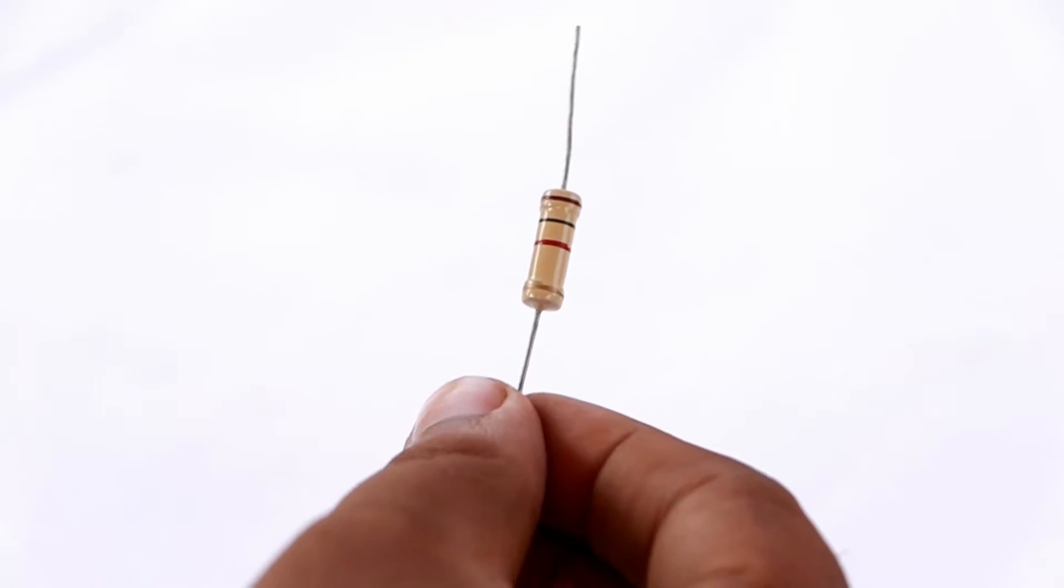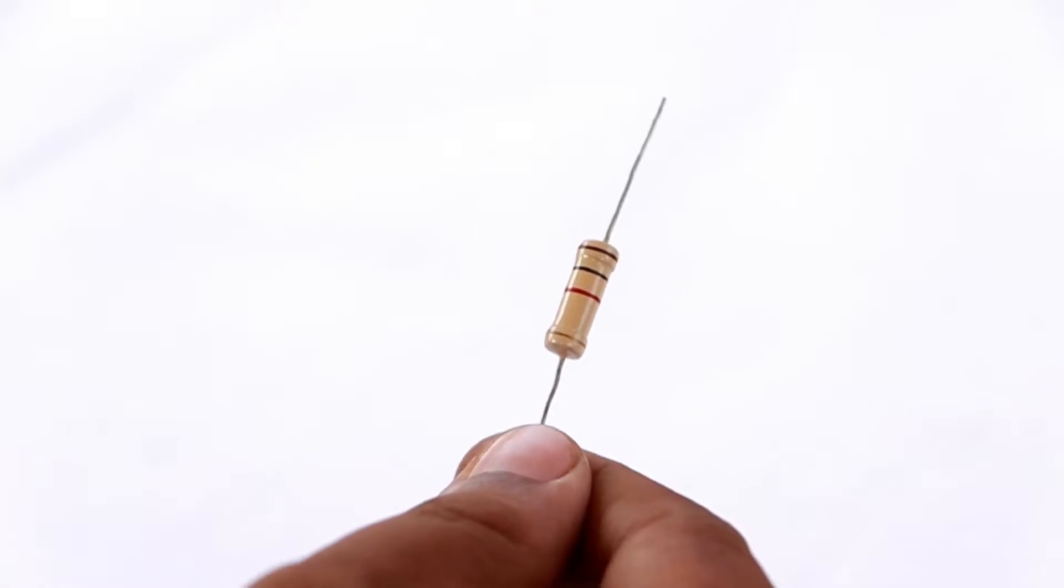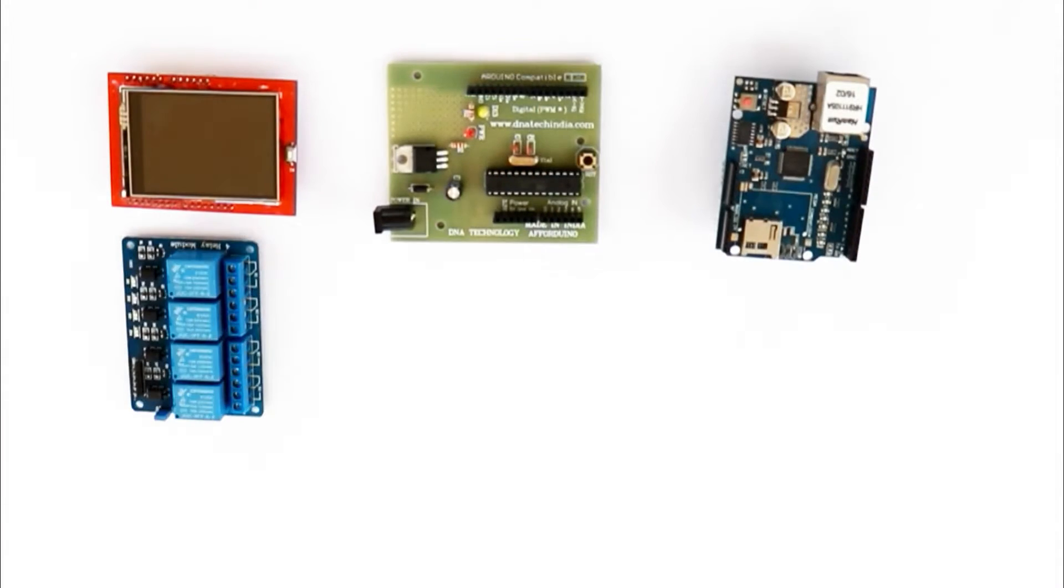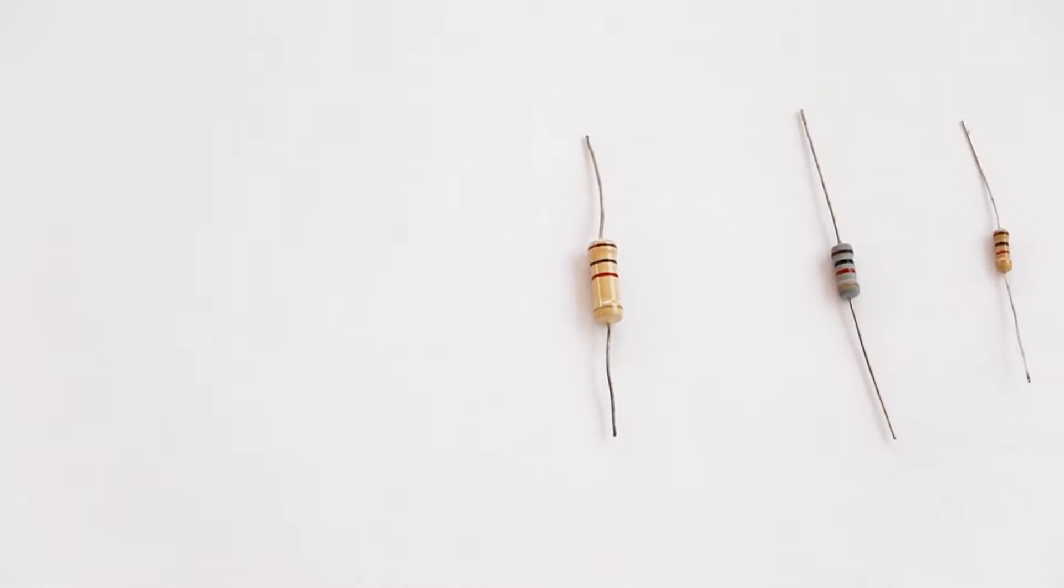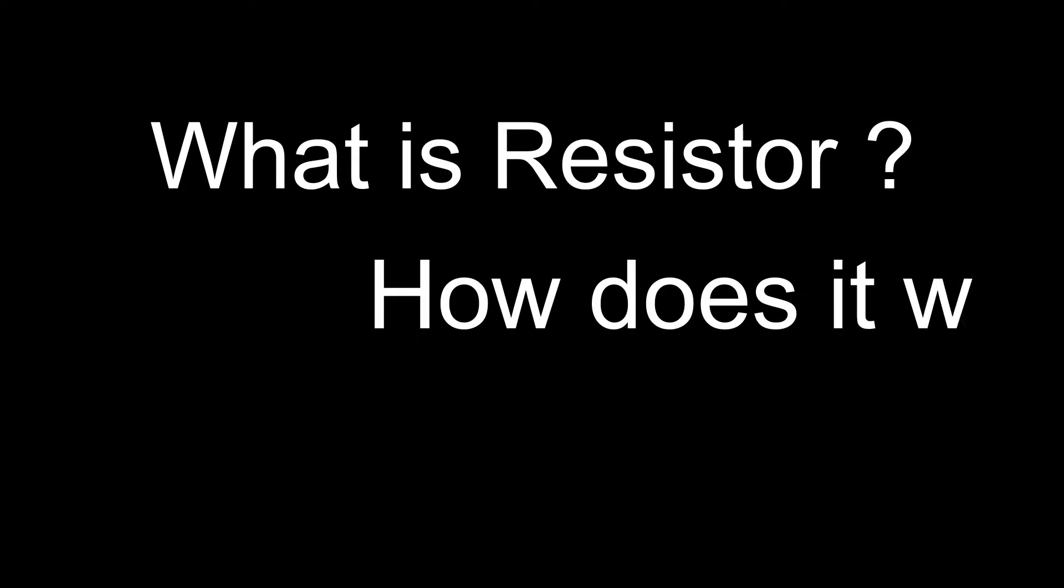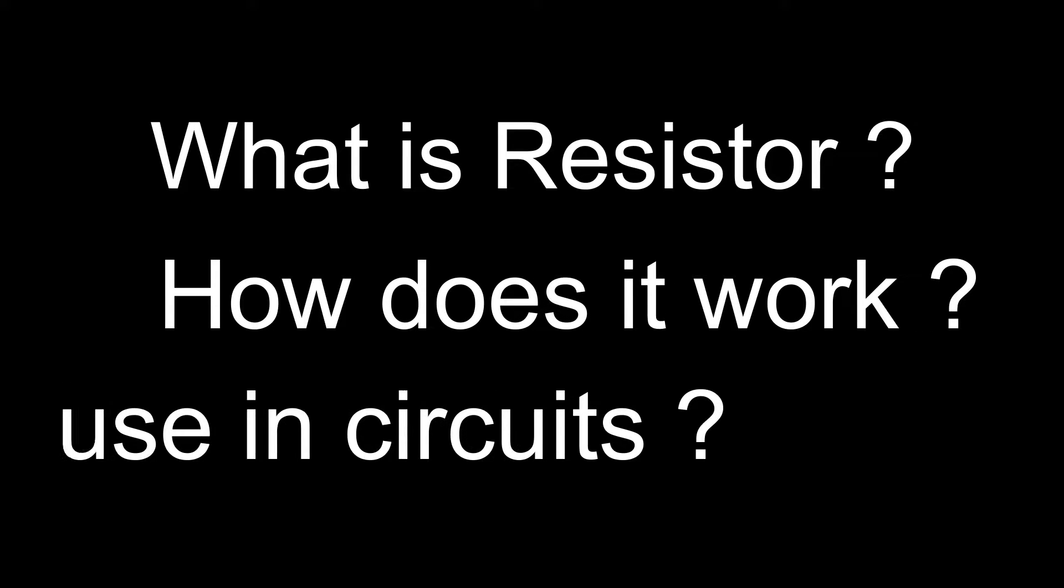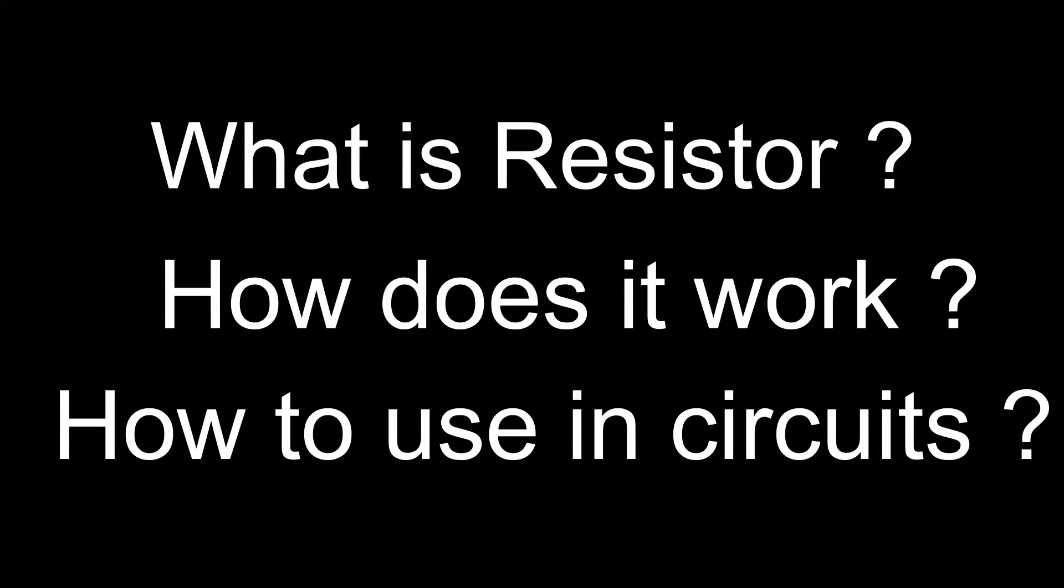Resistors. This is one of the most basic components used in almost every electronic circuit you will ever see. So it's important to understand its working. This video explains what is a resistor, how does it work, and how to use resistors in circuits. Let's get started.